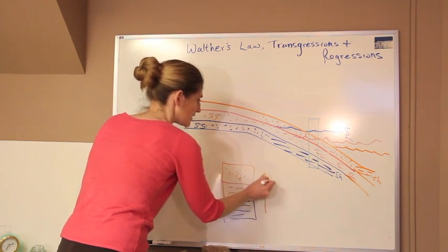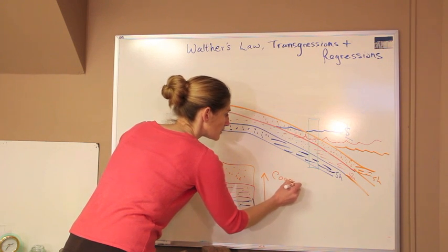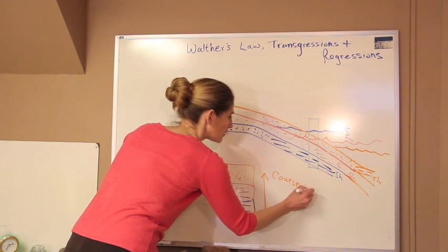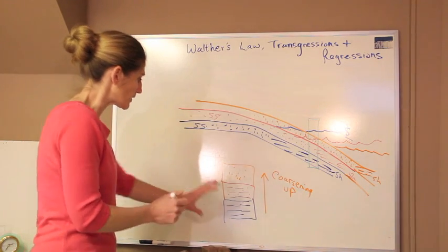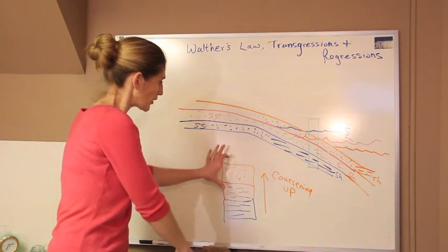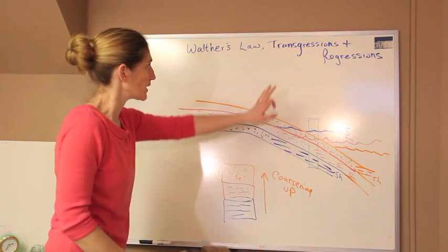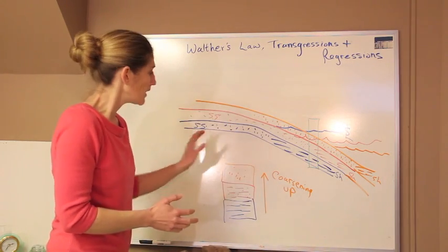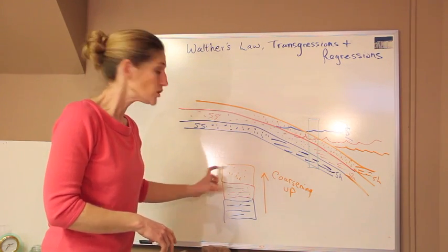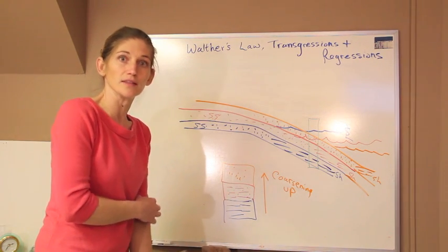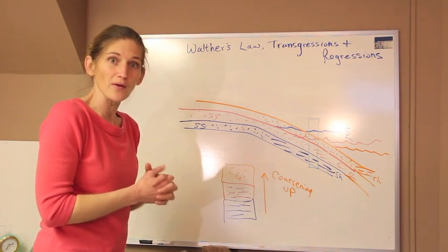So now when we look at this sequence, we see that it has been coarsening upwards. And so that's pretty distinct. When we start to see that the unit has gotten coarser, it means the facies have shifted towards the sea. So we're looking at a regression this time as opposed to the transgression. And so these are just some sequences that we can look for just with changes that we're seeing in the sedimentation that's happening stored in that rock record.